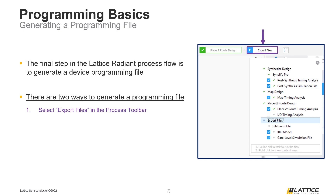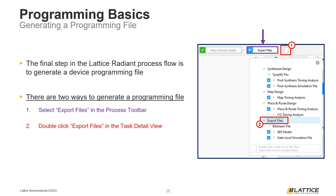The second way to generate a programming file is to use the task detail view by clicking its icon and then double-clicking the Export File section. Both of these methods work the same way and will generate a bitstream programming file for a project's active implementation.